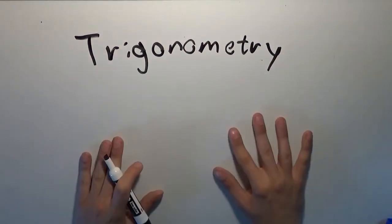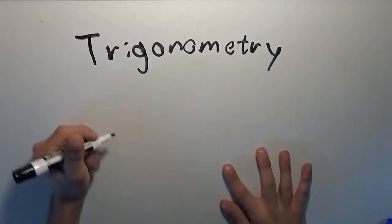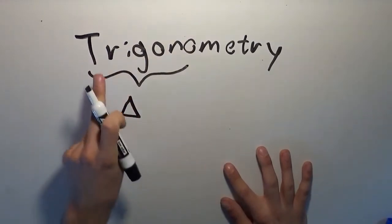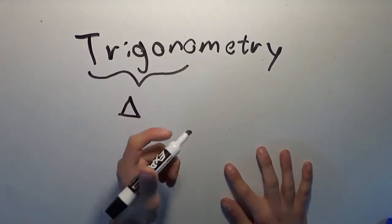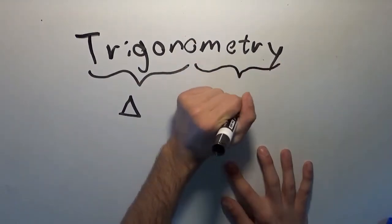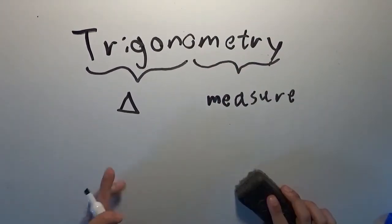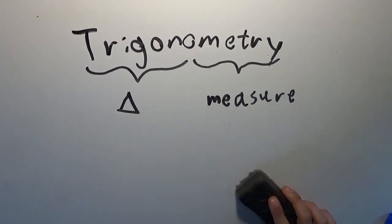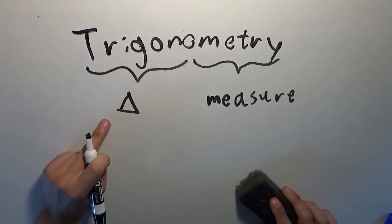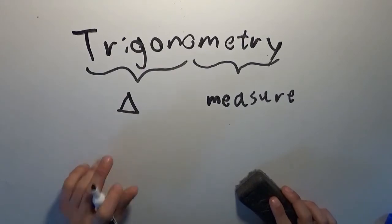This sounds like a big word, like it's going to be something really difficult, but it's nothing to be afraid of. To translate it literally: tri as in three, gon as in number of sides — triangle measure, as in triangle measurement. So we're going to be taking measurements of triangles. You'll find that it actually doesn't have so much to do with the actual lengths of the sides as it has more to do with the size of the angles — the measurement of the angles.